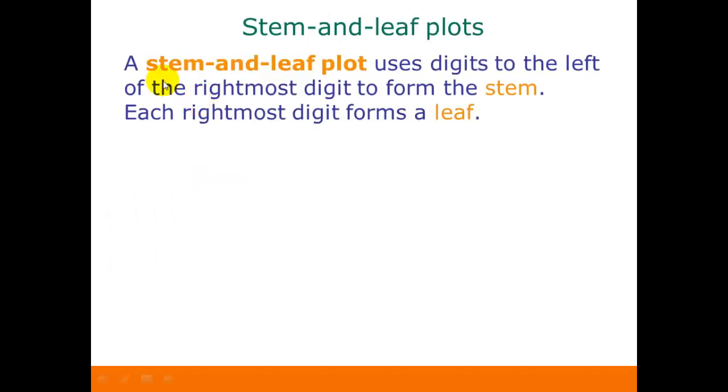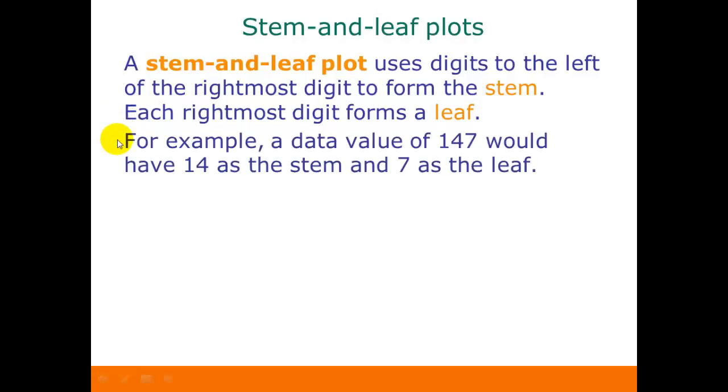A stem-and-leaf plot uses the digits to the left to form the stem and the rightmost digits to form a leaf. For example, if we had a data value of 147, usually we would use 14 as the stem and 7 as the leaf.